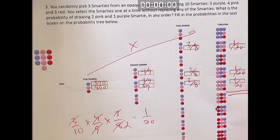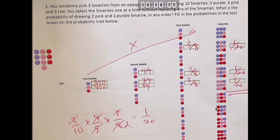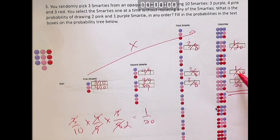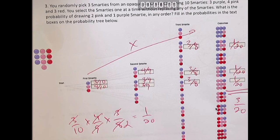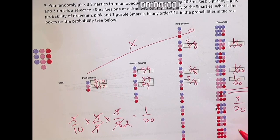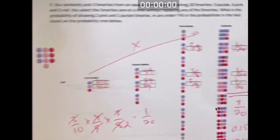The total probability is equal to the sum of the probabilities of each event. The probability of getting pink, pink, purple; or pink, purple, pink; or purple, pink, pink is the same as adding up their probability. I'm going to add them up. I get three out of 20. Three out of 20 is 0.15 or 15%. That's it for question number three.